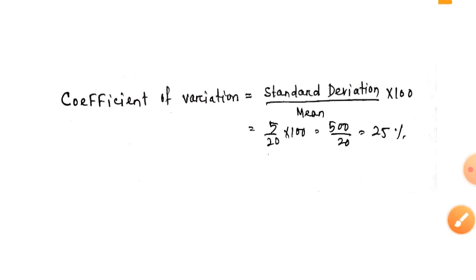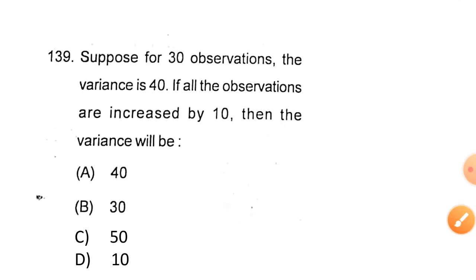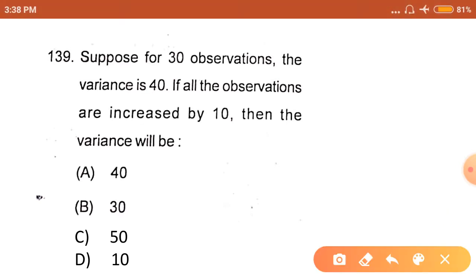Suppose for 30 observations the variance is 40. If all the observations are increased by 10, then the variance will be... We know that variance is independent of change in origin. That means if we add some numbers or deduct some numbers from all the observations, the variance will remain the same, but this is dependent on scale. That means if we multiply or divide some numbers, it will also increase by the same numbers, but remain the same if we add or deduct. The answer is the variance will not change.